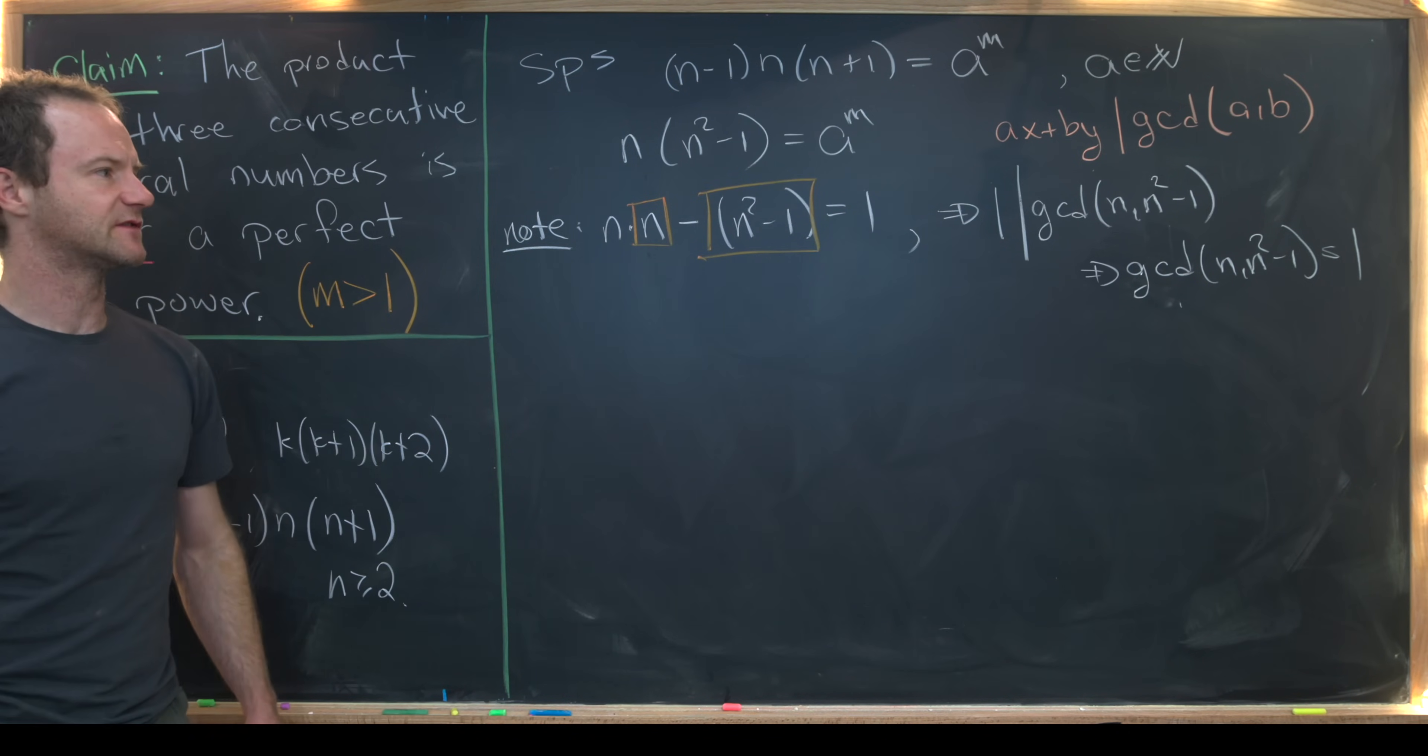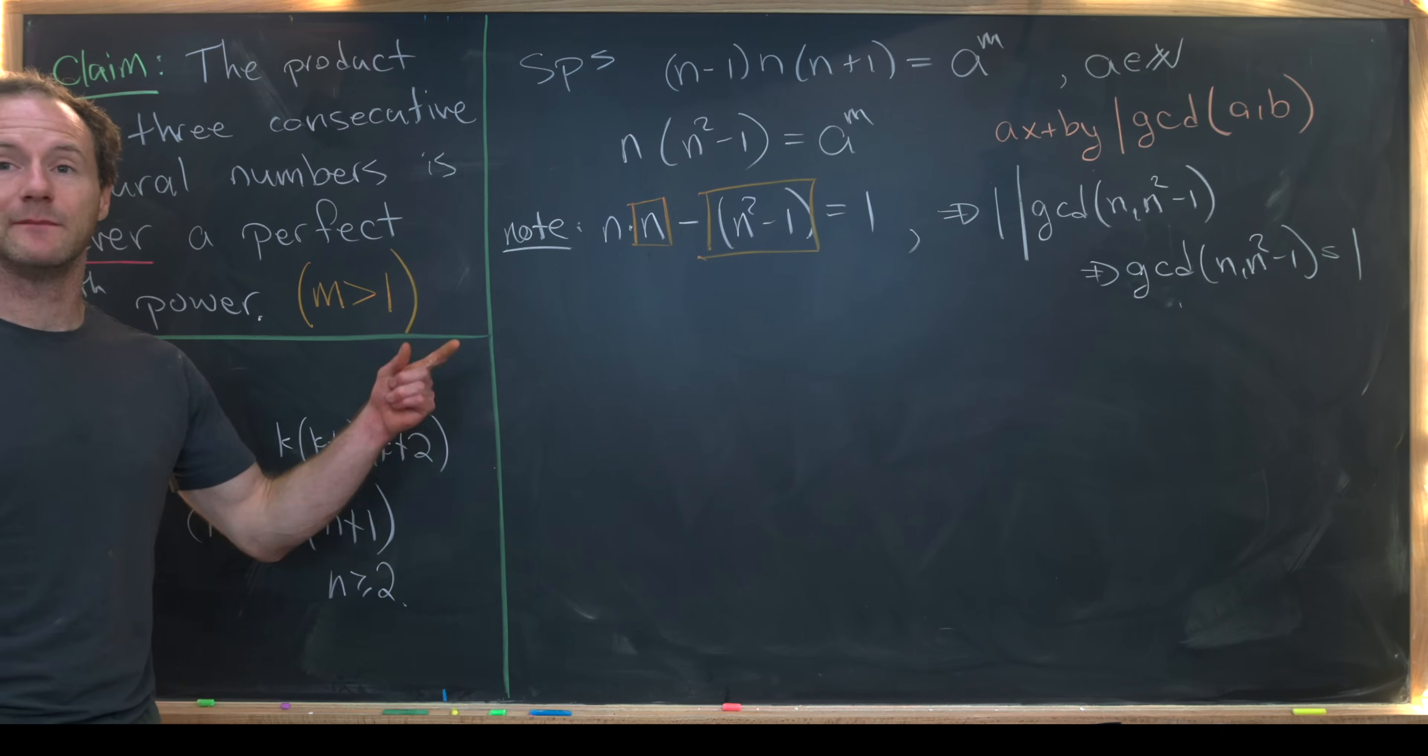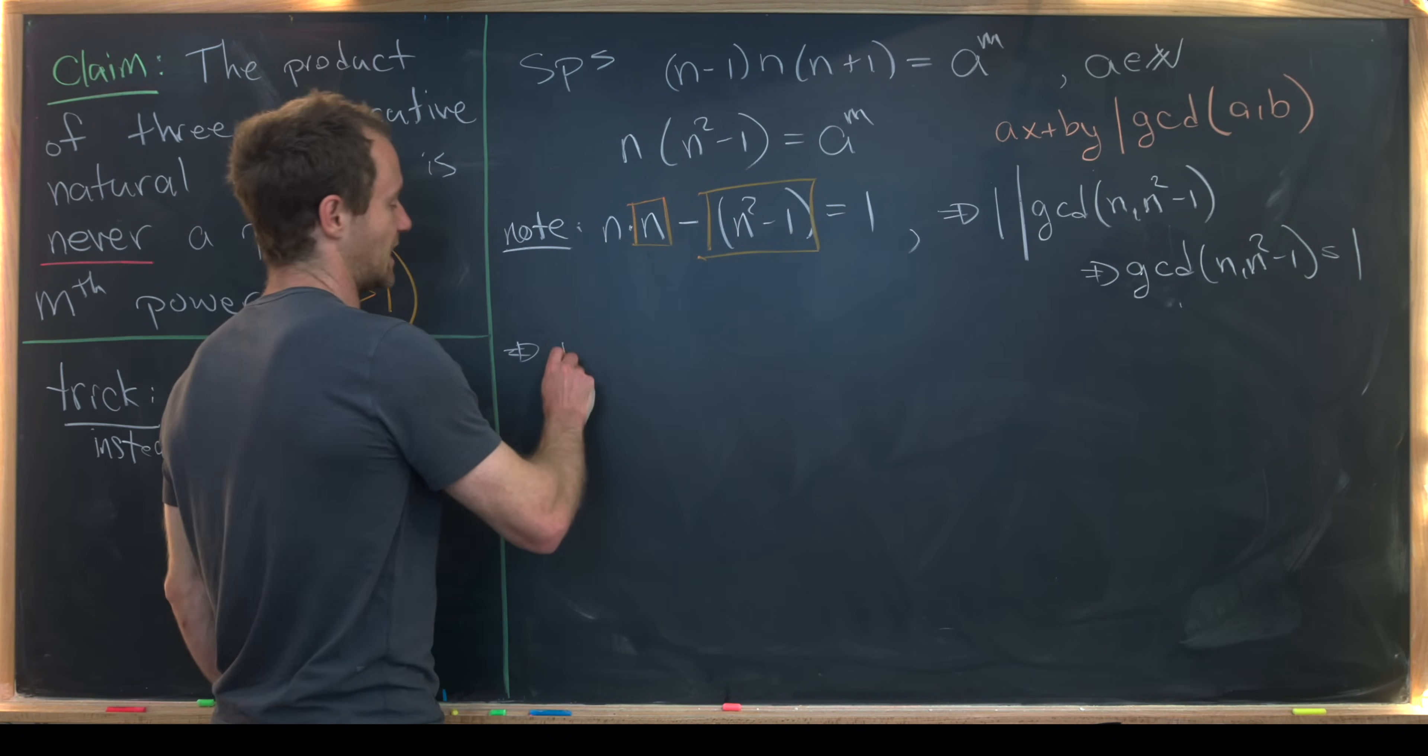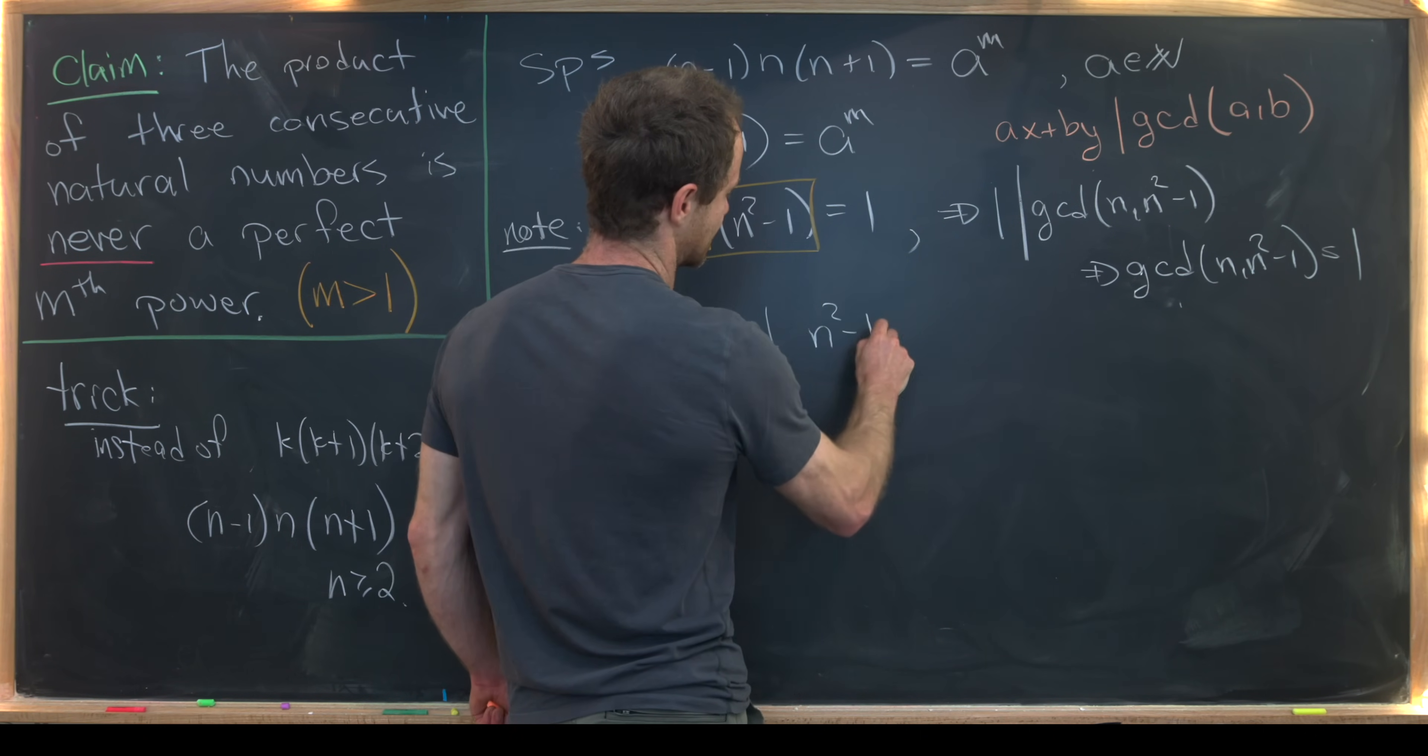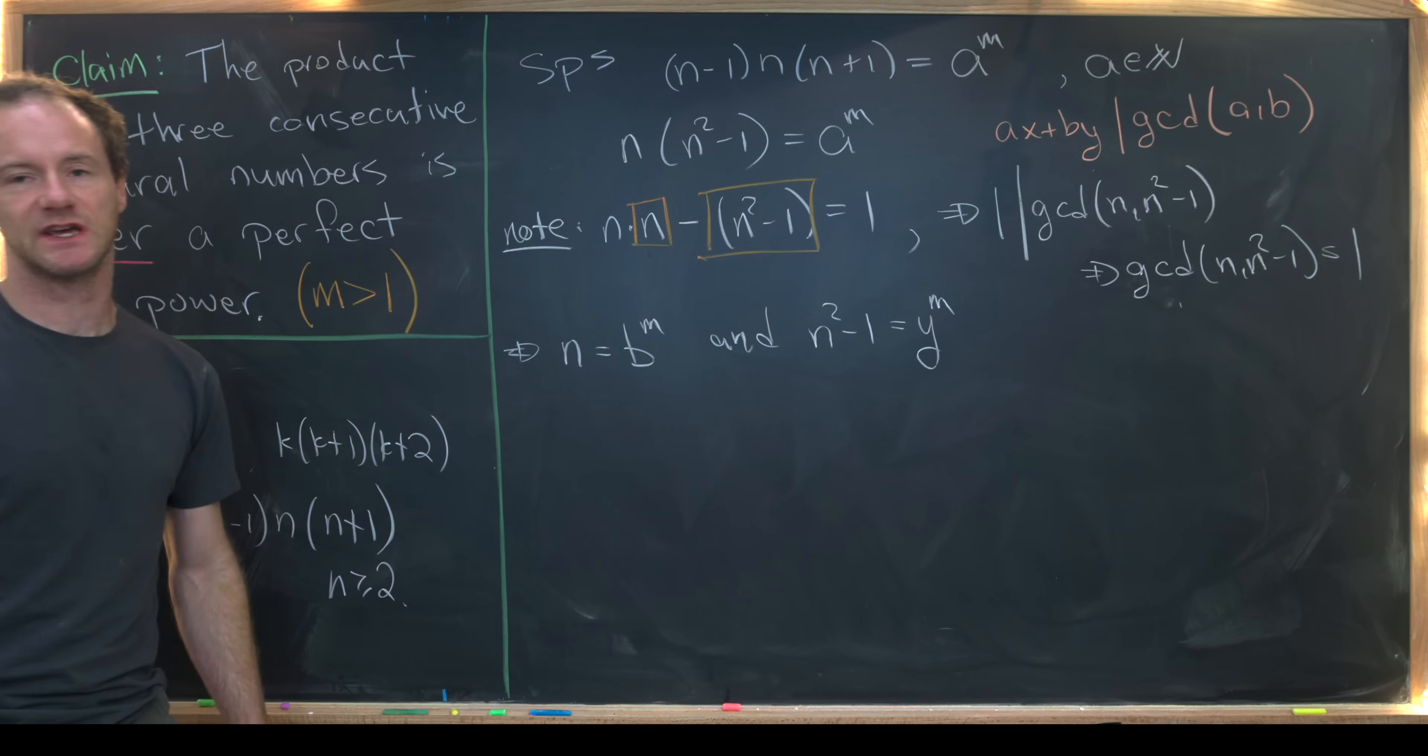But if the GCD of those two numbers is equal to 1, and their product is a perfect nth power, that means each one must be a perfect nth power in its own right. So we can write that down. Now we have n is equal to b to the m, and n squared minus 1 is equal to y to the m. I'm going to use slightly different notation there.